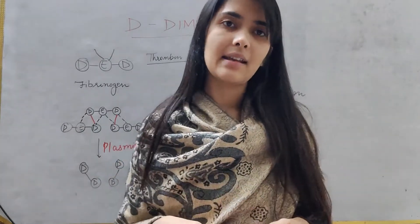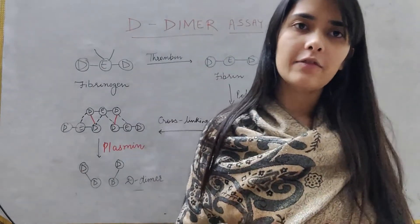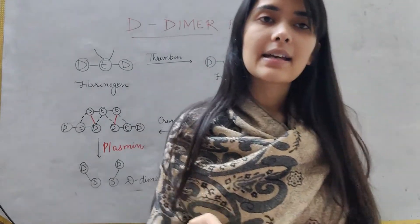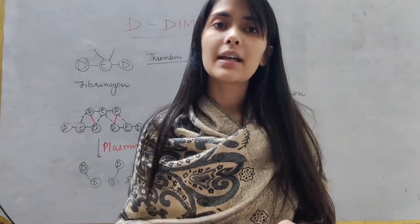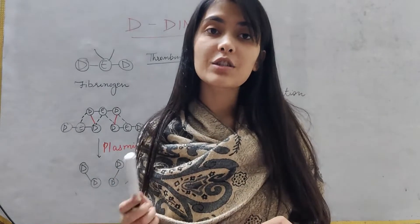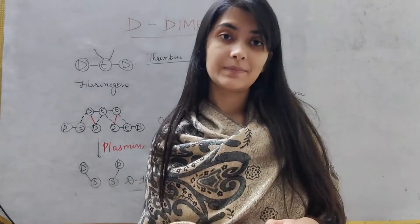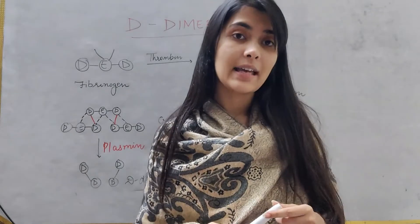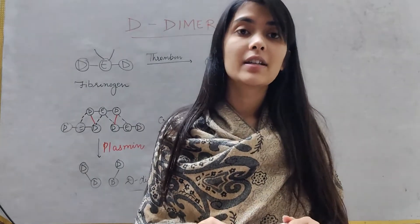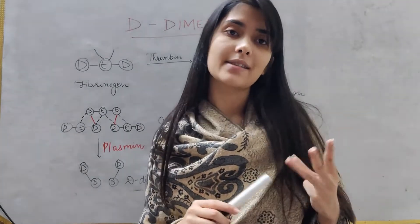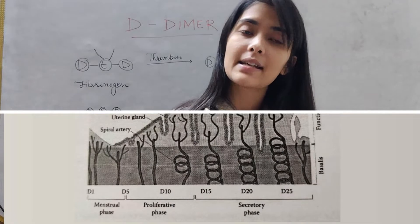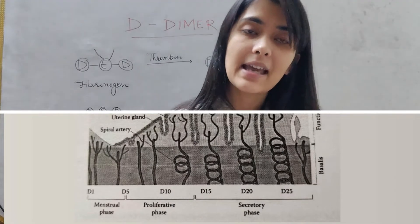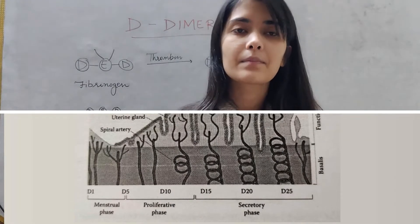The basalis is the layer which does not shed itself, but it generates certain cells that help in regeneration of the functionalis layer. Our menstruation cycle can be divided into three phases: the menstrual phase, the proliferative phase, and the secretory phase.